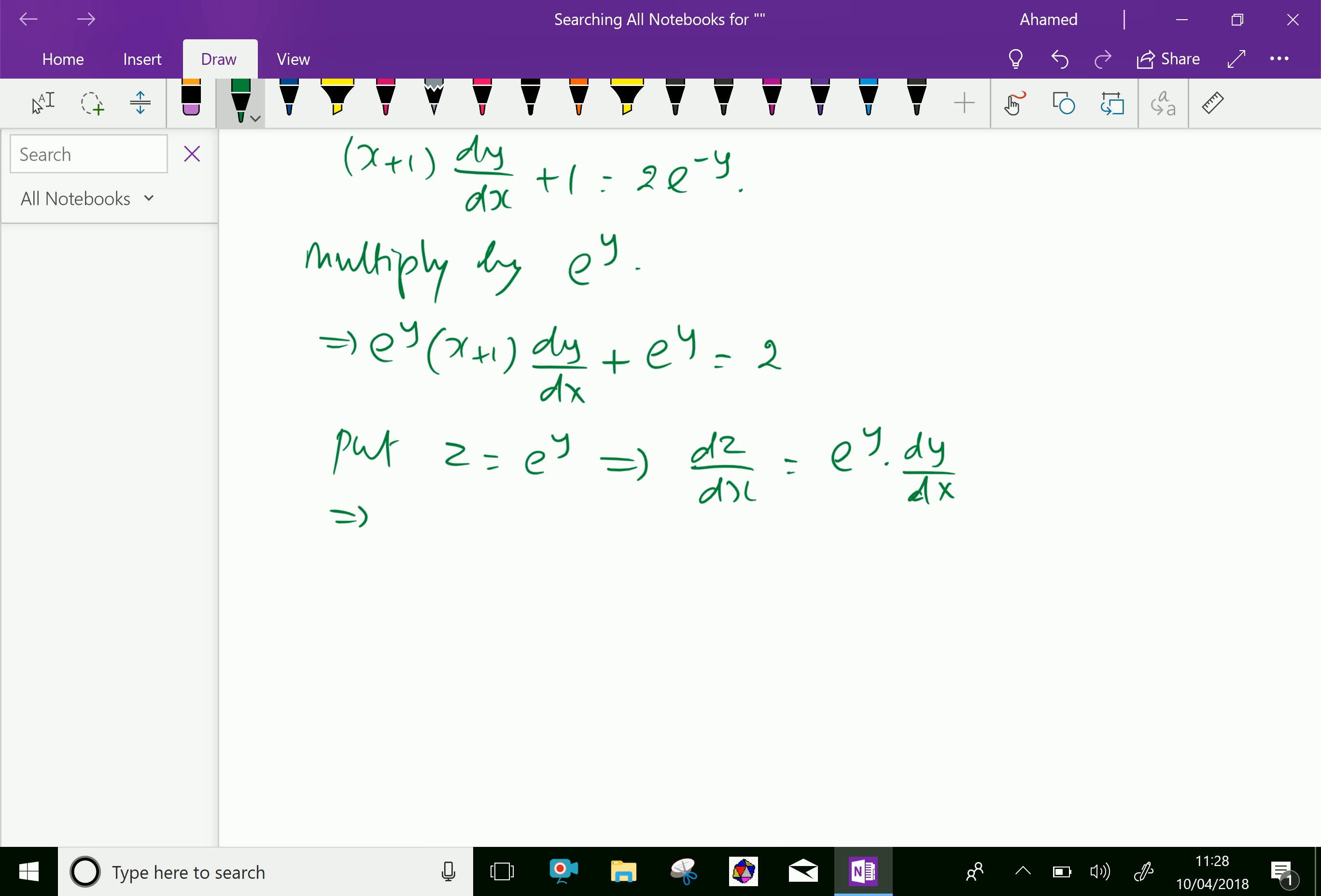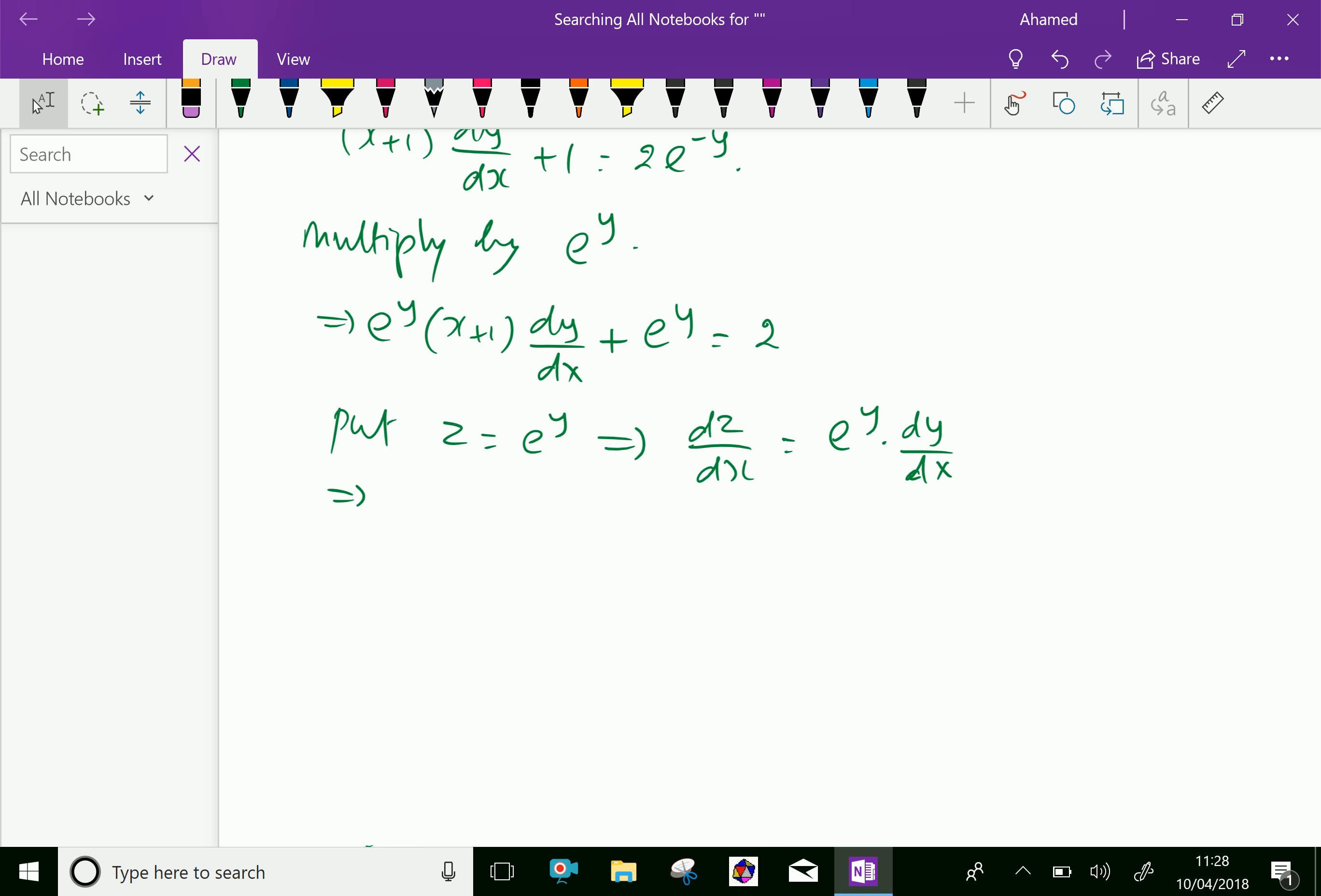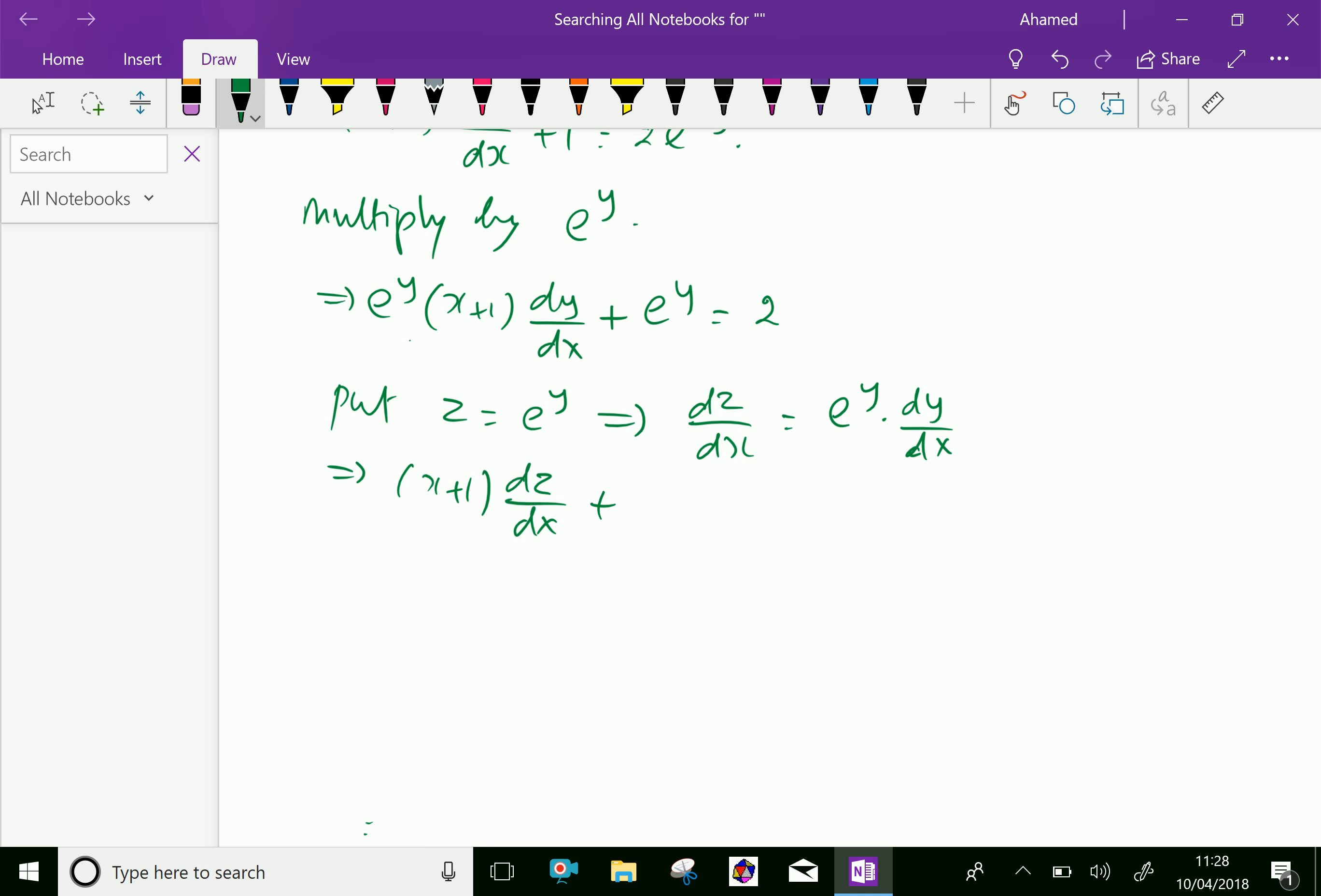Now for the equation, since dz/dx = e^y·dy/dx, we can replace e^y·dy/dx with dz/dx. That gives us (x+1)dz/dx + z = 2.